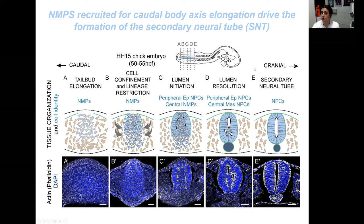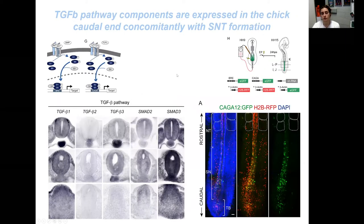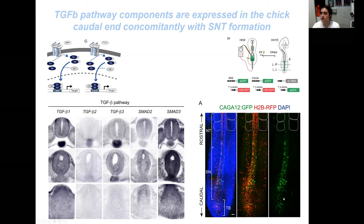In order to search for the signals controlling this process, we performed a screening by in situ hybridization. We observed that the expression of some components of the TGF-beta pathway correlates spatiotemporally with secondary neurulation, especially TGF-beta-1, one ligand of the pathway, and SMAD3, one of the main effectors. Moreover, using a transcriptional reporter of the TGF-beta pathway, we have seen that the pathway is transcriptionally active at the level of secondary neurulation, and the signal is much lower at more rostral levels where the tube is already formed.